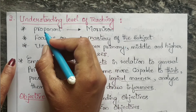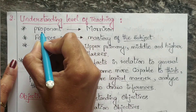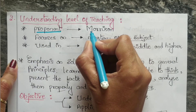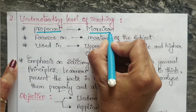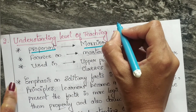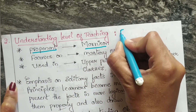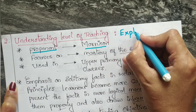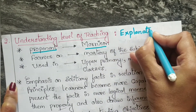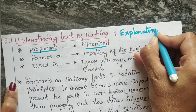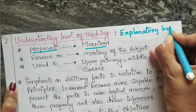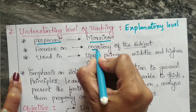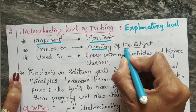The understanding level of teaching was proposed by Morrison. Another name for this understanding level of teaching is the explanatory level, and it mainly focuses on the mastery of the subject.